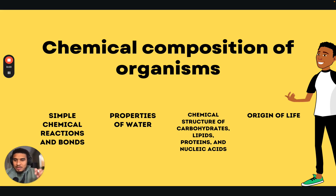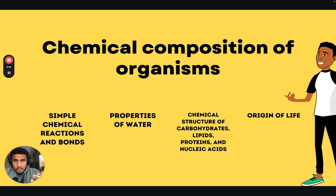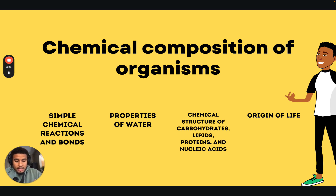You need to know the chemical composition of organisms. You need to understand what carbohydrates, proteins, lipids, and nucleic acids are. You need to understand that chemical reactions in cells involve breaking and forming chemical bonds. Bonds can be covalent and ionic — you need to know the difference between the two and what they're for. And that covers simple chemical reactions and bonds.